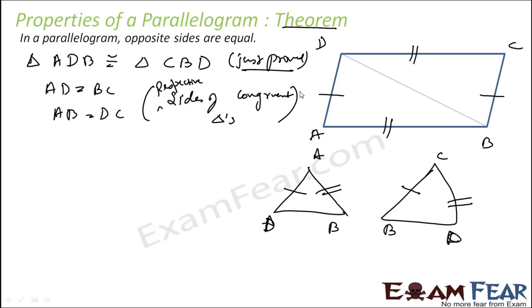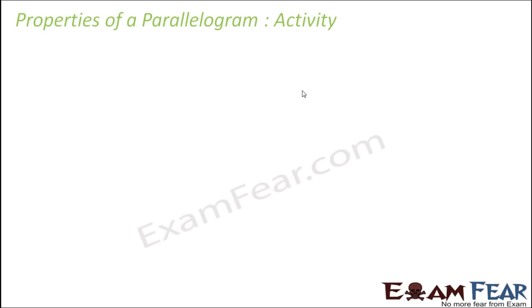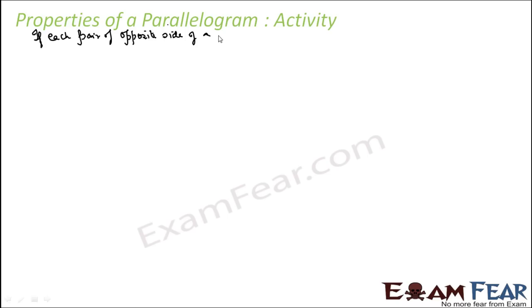In the parallelogram, the opposite sides are not only parallel, they are also equal. Now let's see if the converse is true. The converse will be: if each pair of opposite sides of a quadrilateral is equal, then it is a parallelogram.